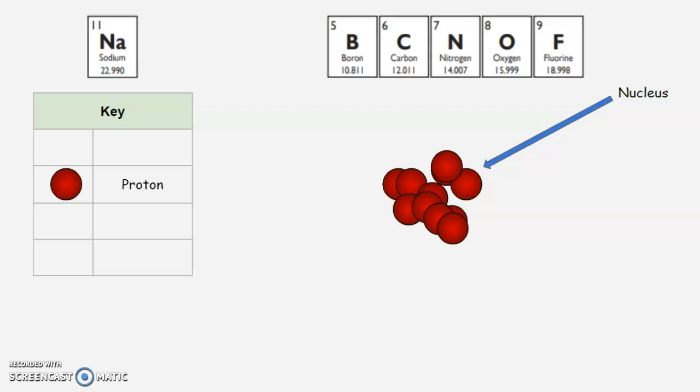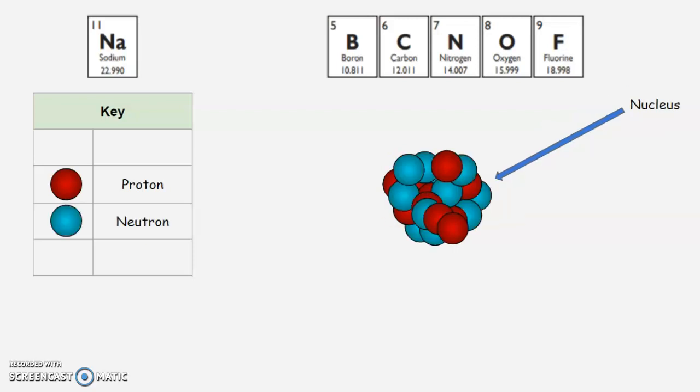Next, we're going to look at the number of neutrons. Neutrons are also found in the center of the atom in the nucleus. So how do we determine the number of neutrons in an atom?